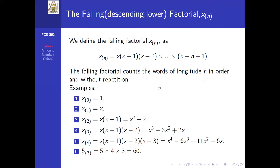Next, we define the beta function. The primary definition is B(m,n) = integral from 0 to 1 of x^(m-1) times (1-x)^(n-1) dx. An alternative definition uses a trigonometric form: B(m,n) = integral from 0 to π/2 of 2·sin^(2m-1)(θ)·cos^(2n-1)(θ) dθ. A third definition is the integral from 0 to infinity of x^(m-1)/(1+x)^(m+n) dx.